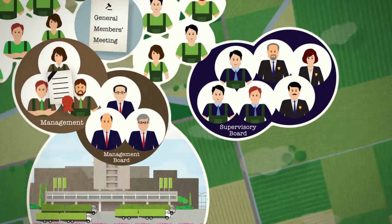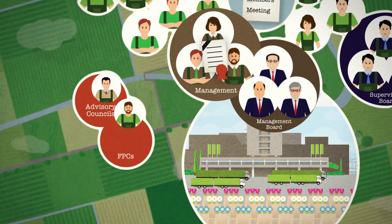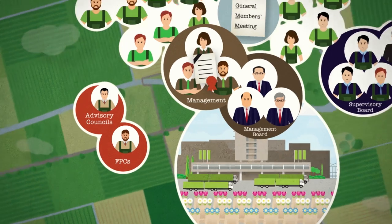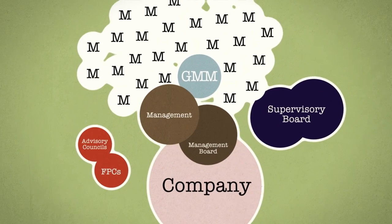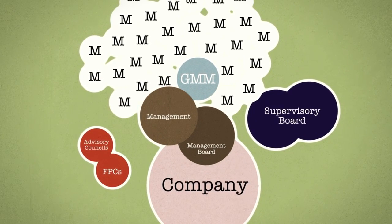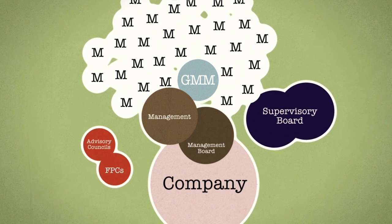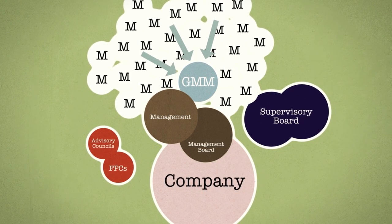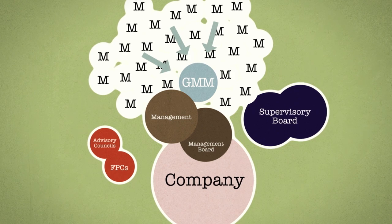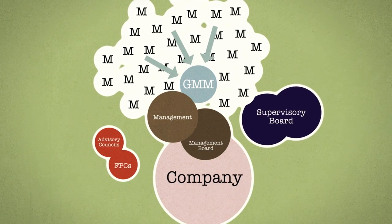In order to increase member involvement, advisory councils and FPCs were introduced a few years later. If we zoom out, we see that the structure of the cooperative rests on five key pillars. The association, consisting of members who can exert influence and control over the company by way of the general members meeting.